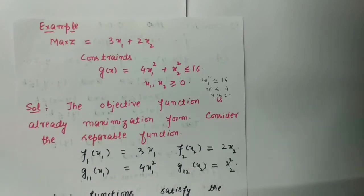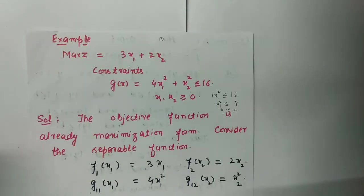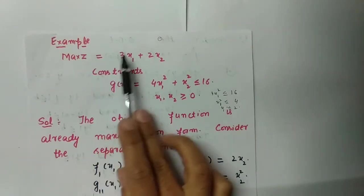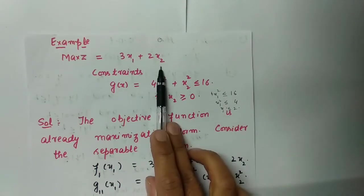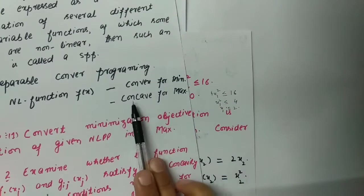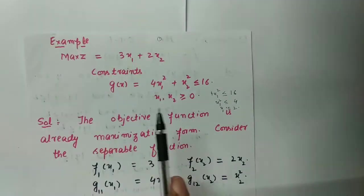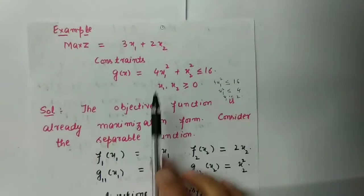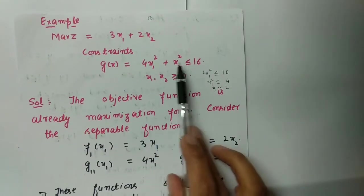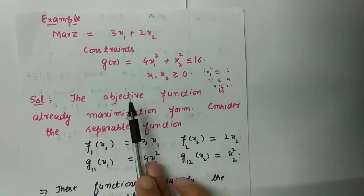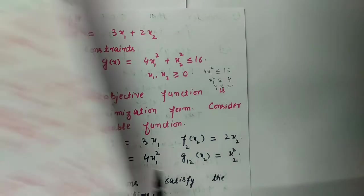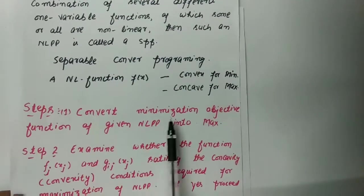Here the objective function is: maximize Z = 3x₁ + 2x₂. The function is of maximization type, which means it is concave. The constraint is 4x₁² + x₂² ≤ 16, with x₁, x₂ ≥ 0.